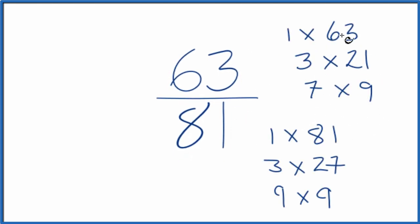So we have the factors for 63 and 81. We're looking for the greatest common factor, and it looks like the greatest common factor will be 9. So we'll divide 63 by 9, 81 by 9, and we'll have simplified 63 81sts.